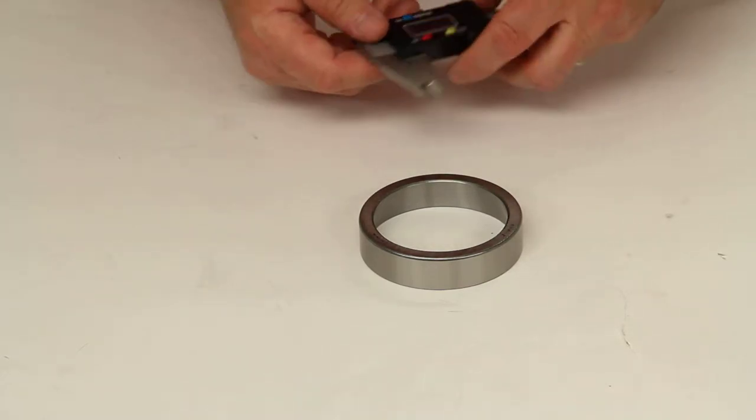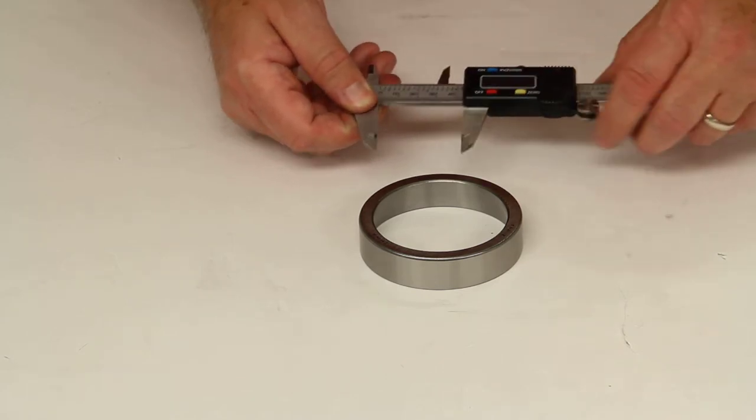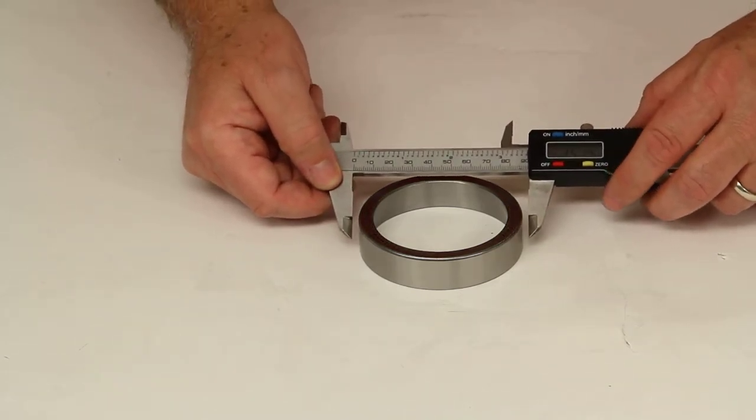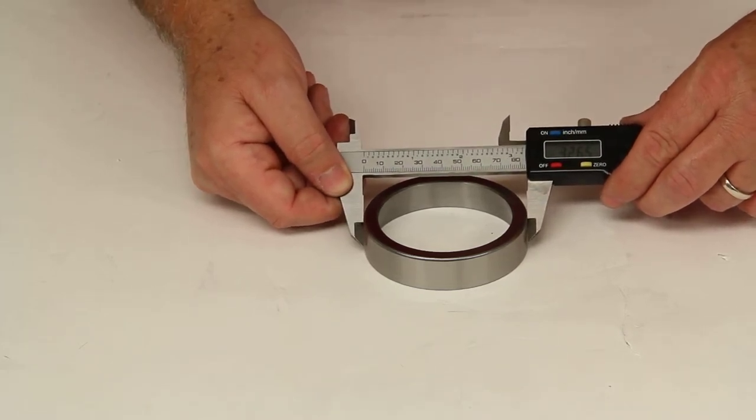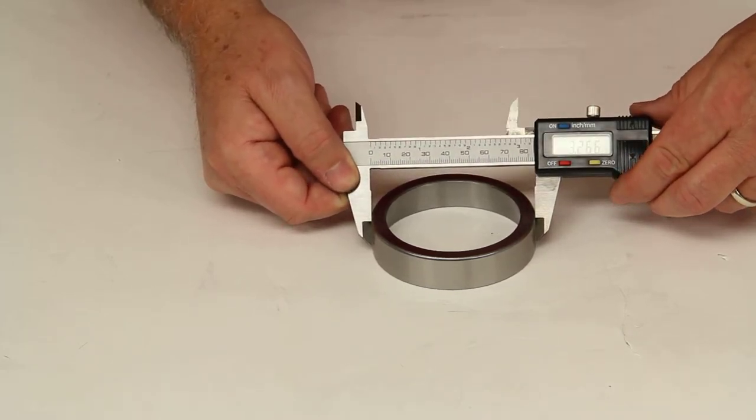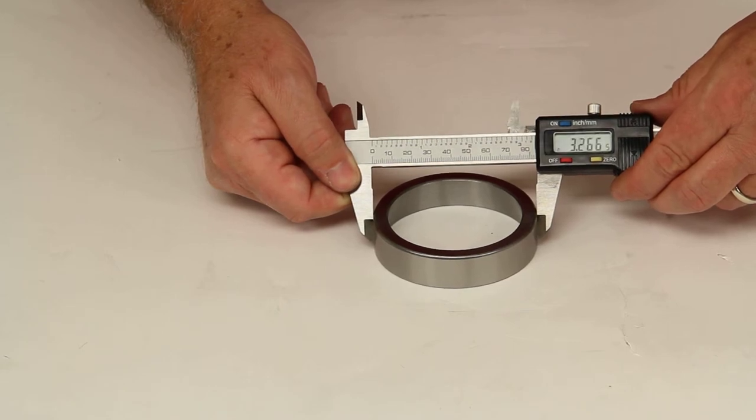It is listed in thousandths of an inch. We have a digital caliper here. The overall diameter on this bearing race is 3.265.